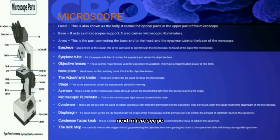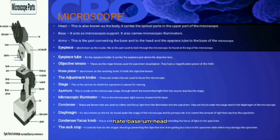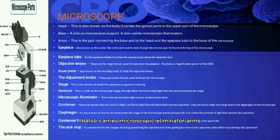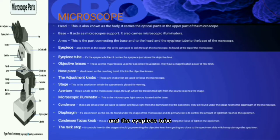Microscope: Three structural parts of the microscope are head, base, and arm. Head — also known as the body, it carries the optical parts in the upper part of the microscope. Base — it acts as microscope support and also carries the microscopic illuminator. Arm — this is the part connecting the base to the head and the eyepiece tube to the base of the microscope.